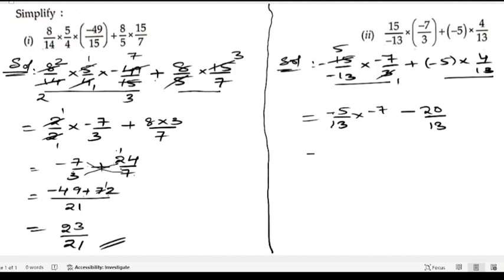So 35/13 - 20/13. Here the LCM is 13 since the denominators are the same. Now subtract 20 from 35 to get 15/13.